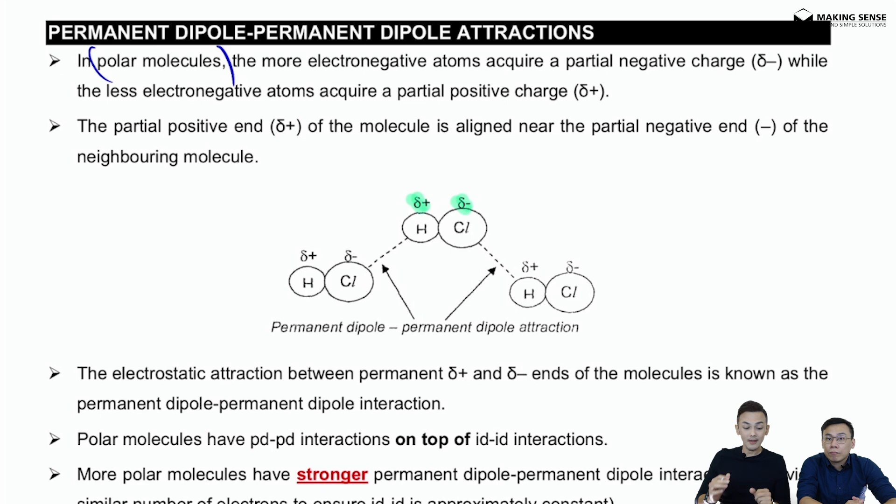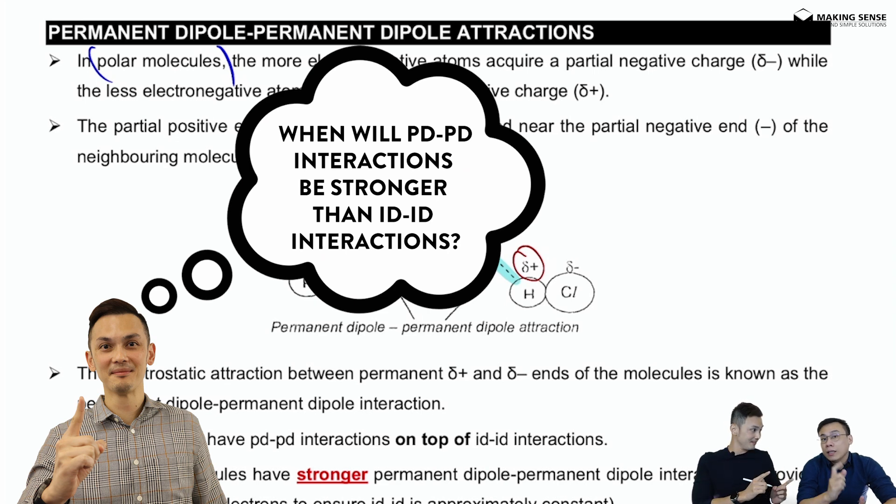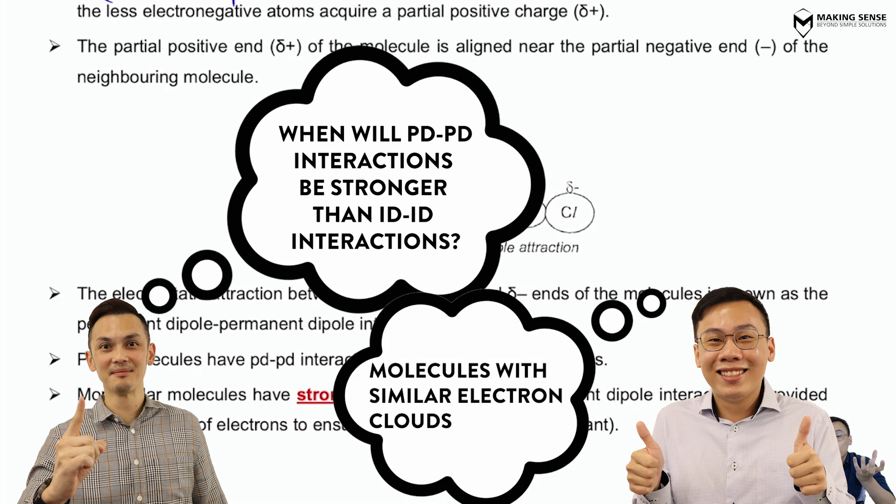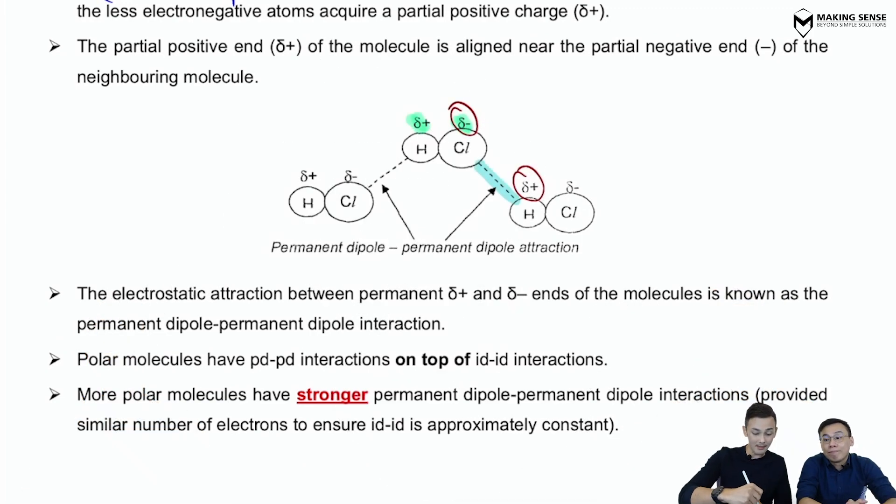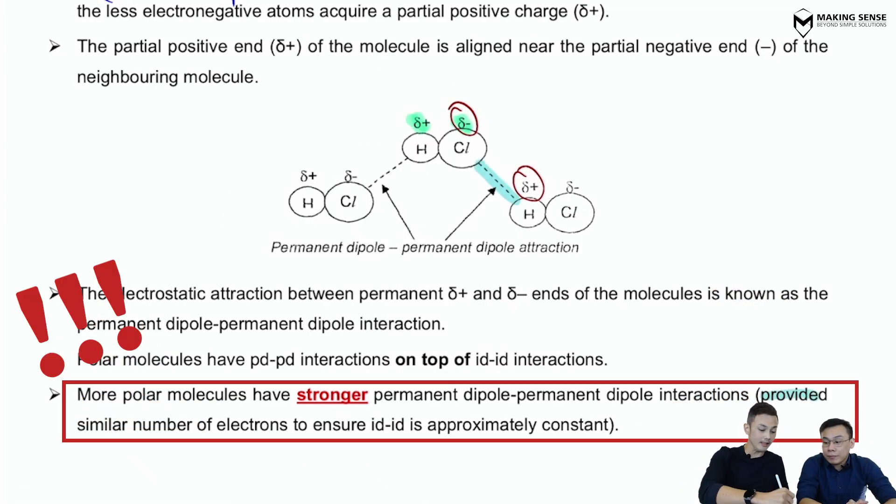Various HCl molecules position themselves such that the delta minus of one molecule is aligned next to the delta plus of a neighboring molecule. They will have this permanent dipole-permanent dipole interaction between them. Because the interaction is permanent, we expect PD-PD to be stronger than ID-ID, provided that the size of the electron cloud of both molecules is about the same. It's important to check the amount of electrons to ensure that ID-ID is approximately constant.